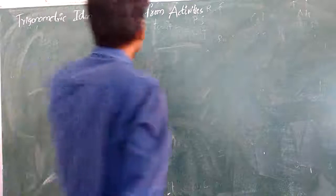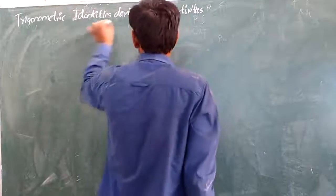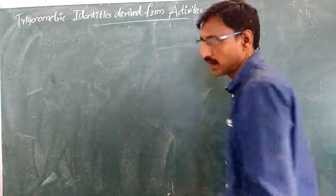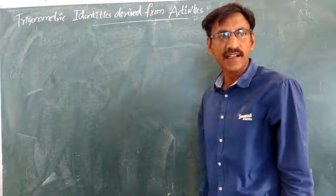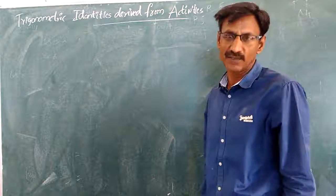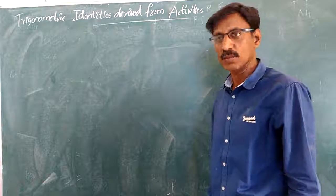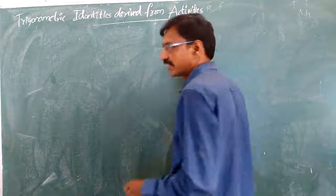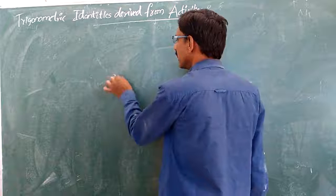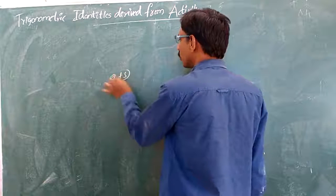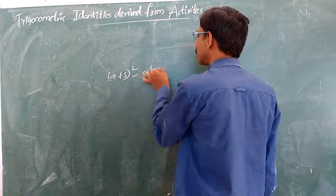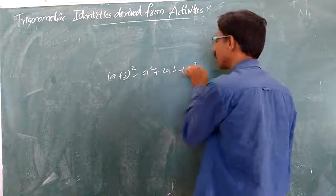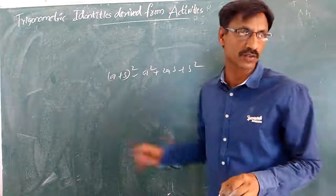Trigonometric identities are derived from activity. Just like algebraic identities — for example, (A + D)² equals A² + 2AD + D² — trigonometric identities follow a similar concept. This is algebraic identity compared to trigonometric identity.